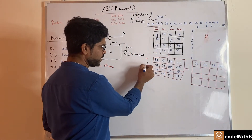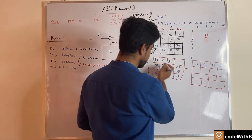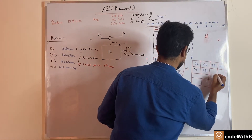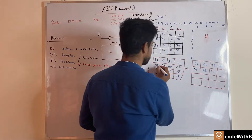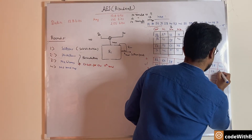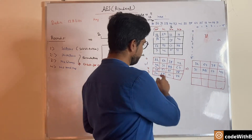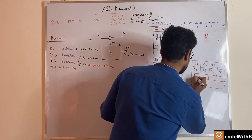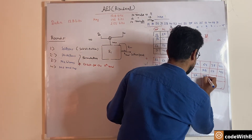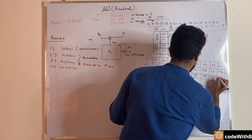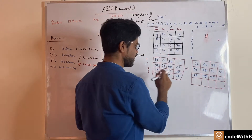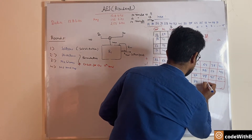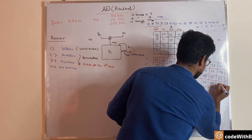Row 1 will be shifted by one byte, so '31' moves to the first position and every other value shifts accordingly — the first value goes to the last. Row 2 will have a two-byte shift, so '2F' comes to the first position, then '78', '35', and '51'. For row 3 there is a three-byte shift, so '72' comes first, then '34', '67', and '14'.